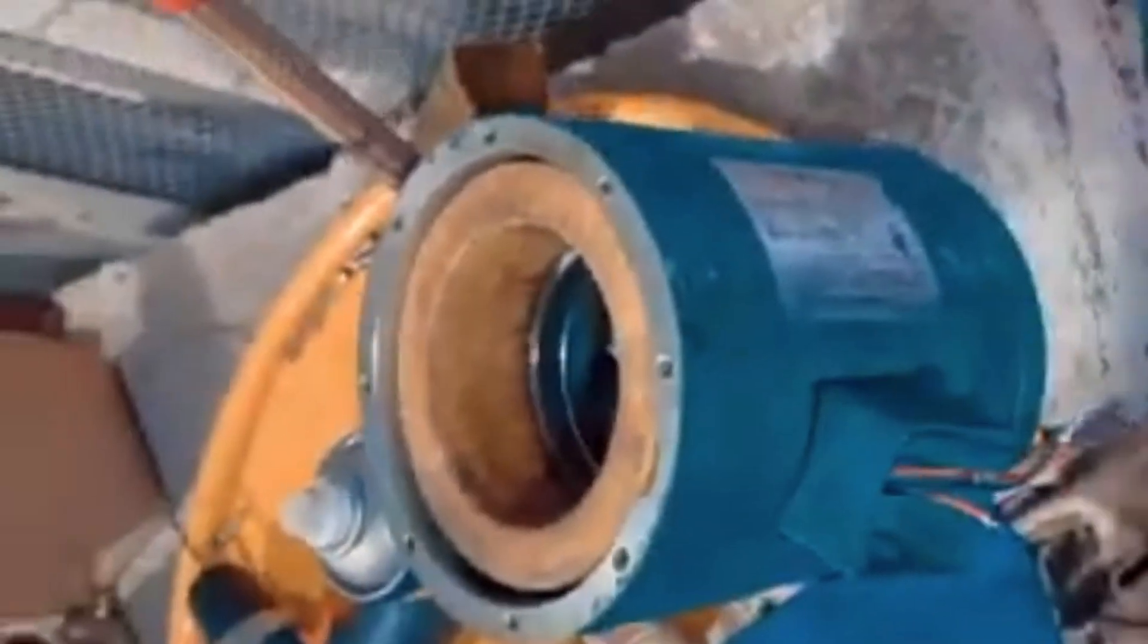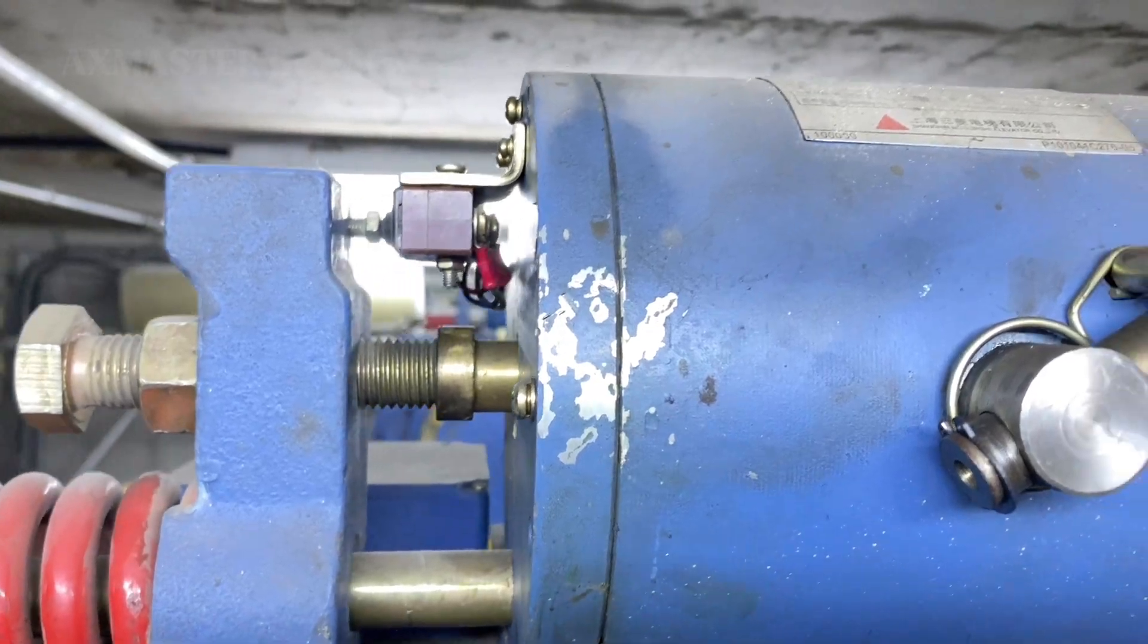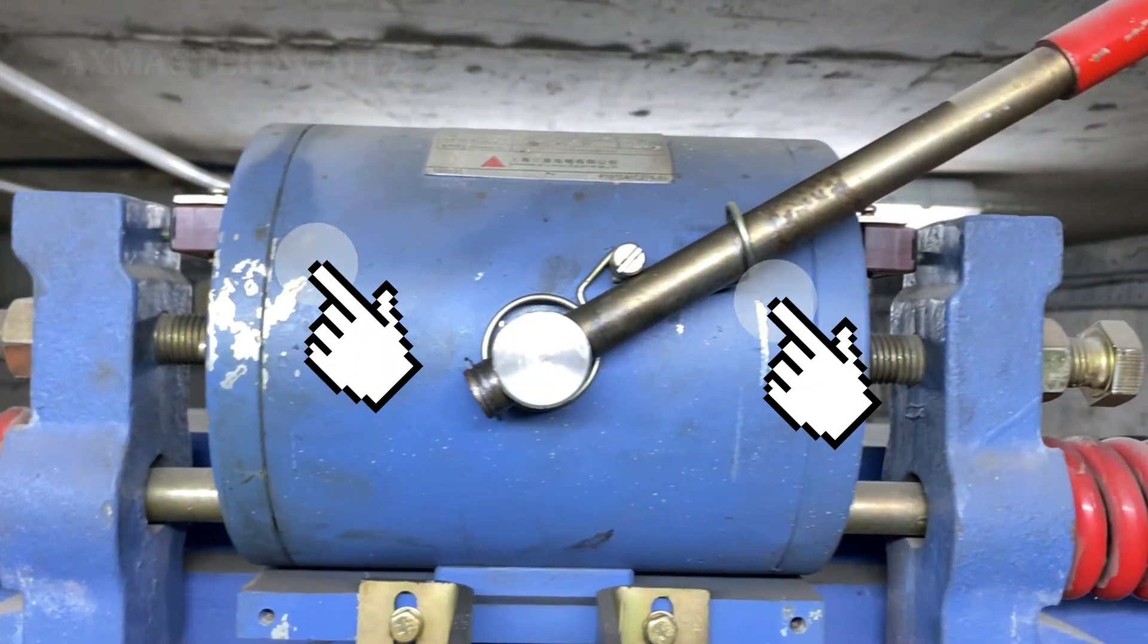Next, we have the brake coil. There are two coils, one on the left and the other on the right. These coils are situated inside the brake at both ends.